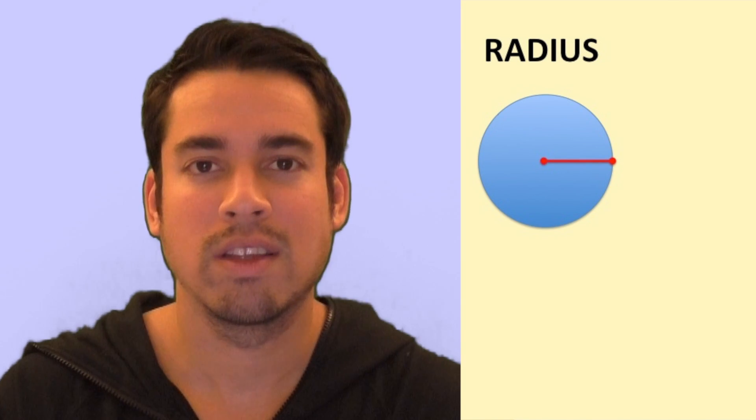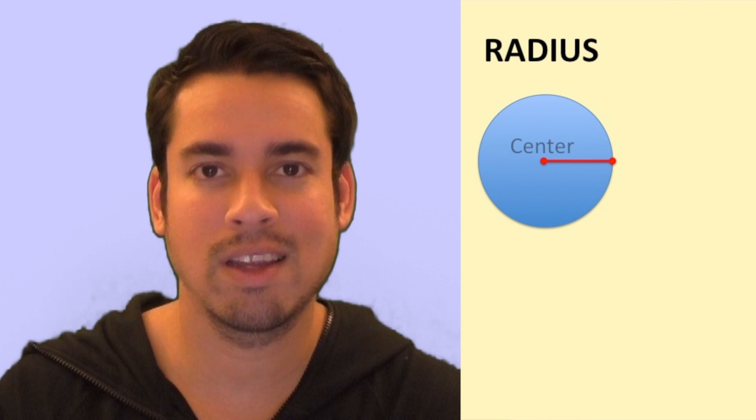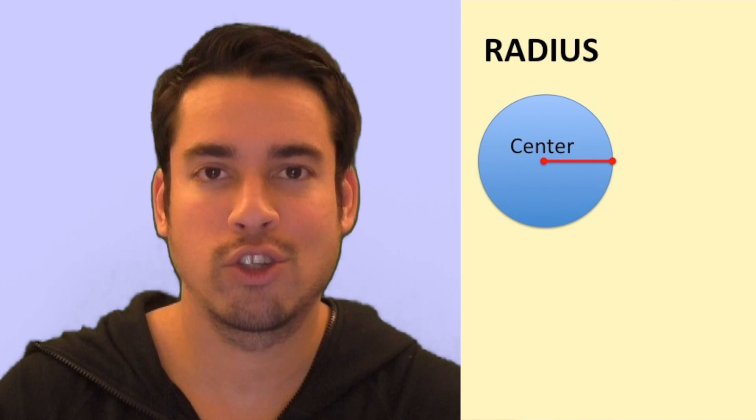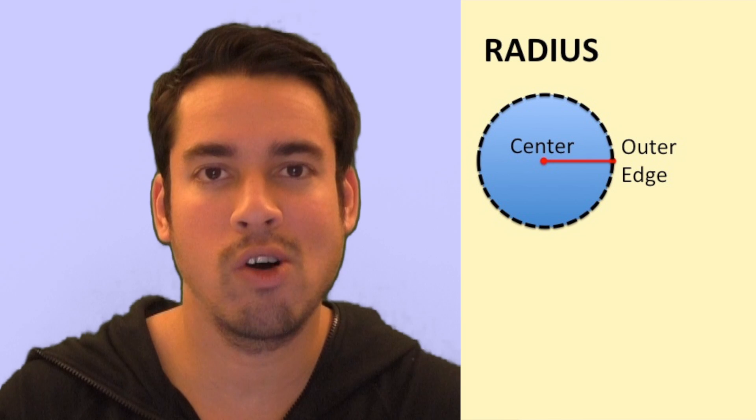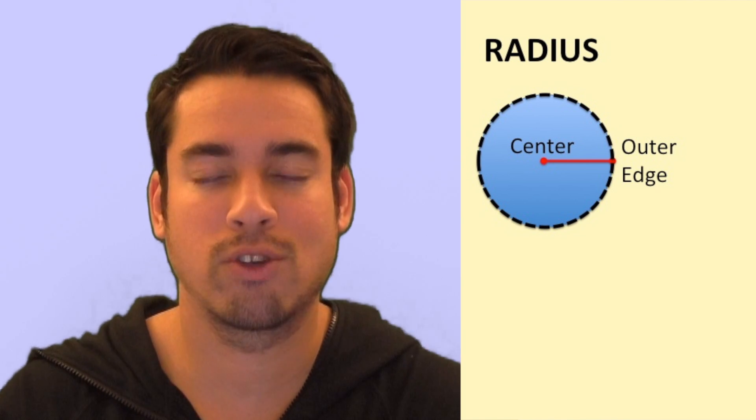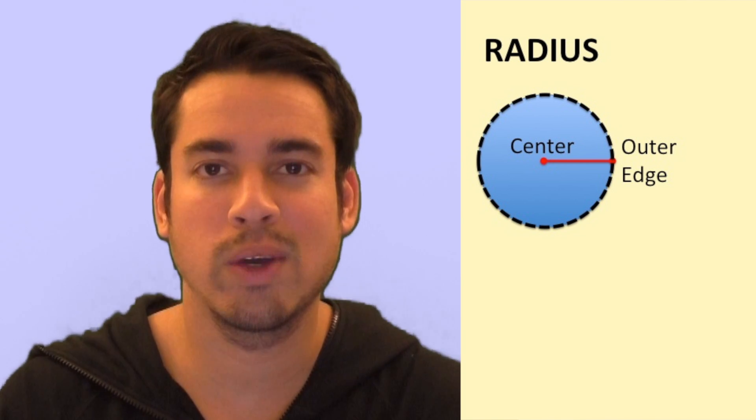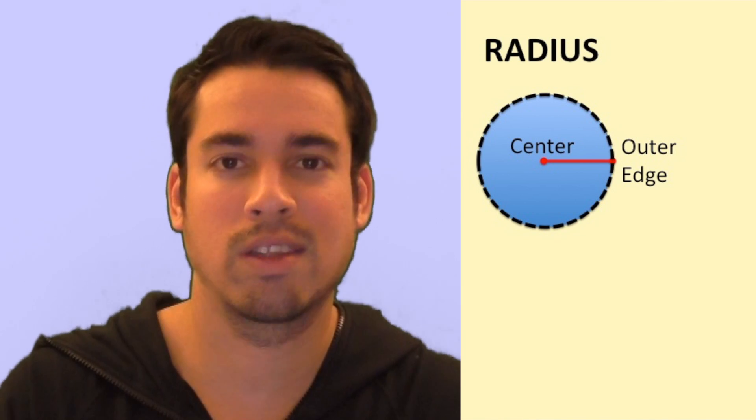The first thing that you need to know about a circle is what a radius is. A radius is simply a line segment that stretches from the precise center of the circle out to one of the outer edges. It's a straight line. That's all it is and you're going to need to know that to do a bunch of the calculations later. Radius from the center to the outer edge.